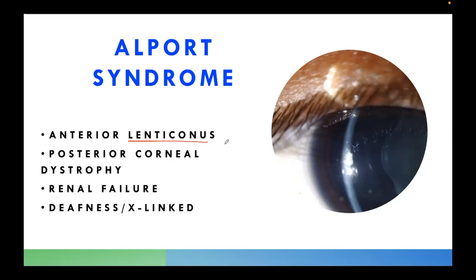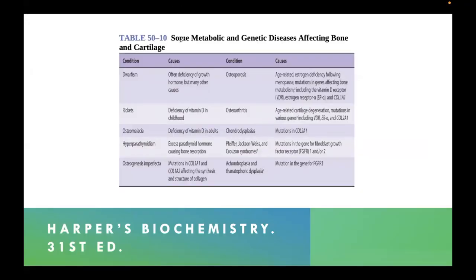Lastly, we have one table from Harper's. This is from Chapter 50. Some metabolic and genetic diseases affecting the bone and the cartilage. Here's dwarfism. So the basic problem in dwarfism is the growth hormone. They can also be presenting with osteoporosis. Rickets. So that's vitamin D. And take note, childhood. So you will notice the gene mutations here. Different collagens. Collagen 1A, collagen 2A, and so on. You don't have to memorize that.